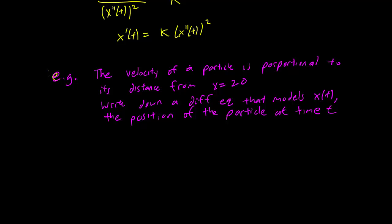Again, we look at what this is saying. So again, we look at the word proportional, which implies there's a fraction somewhere. So the velocity is proportional to the distance from x equals 20. So we know what's on top. That's the velocity,